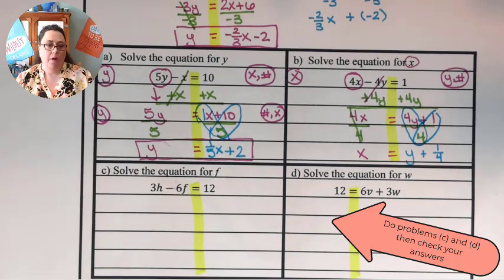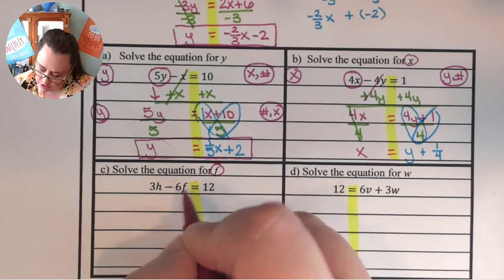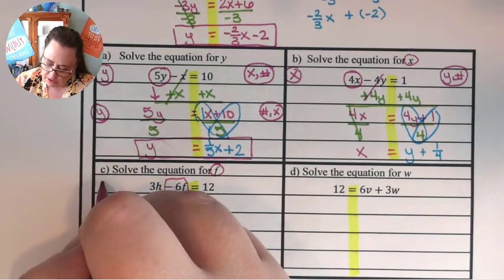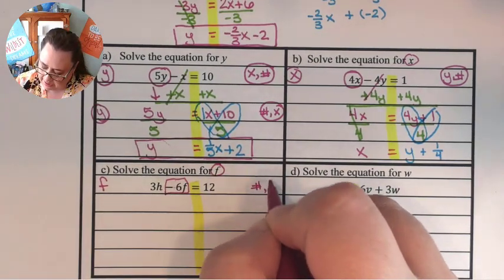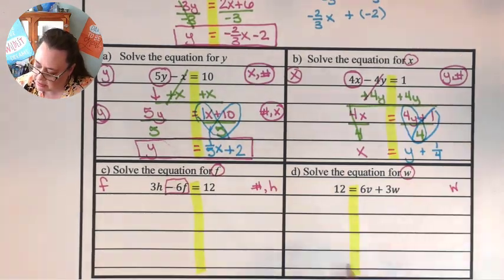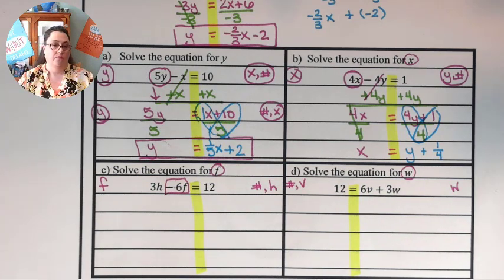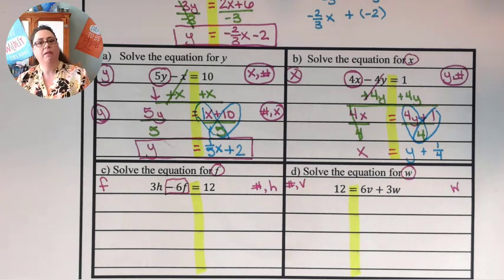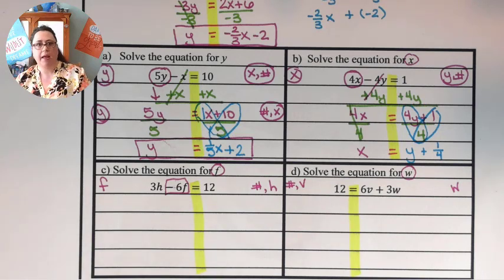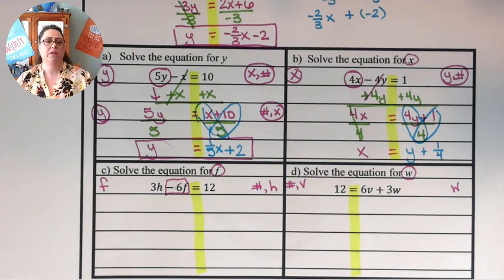Try the next two on your own, then come back and see how you did. Did you identify that in problem c you were solving for f, meaning negative 6f was your variable term — f's on one side, numbers and h on the other? And in problem d, solving for w means w's on one side and numbers and v on the other. If you didn't get that, pause and try again. I'll now work through those problems quickly without talking, so you can see all the work together.